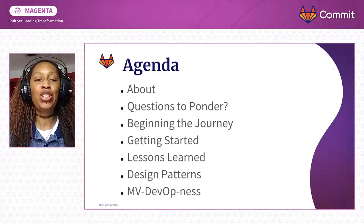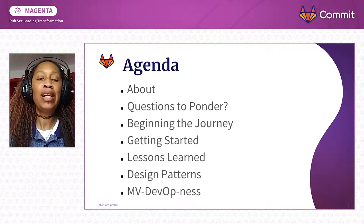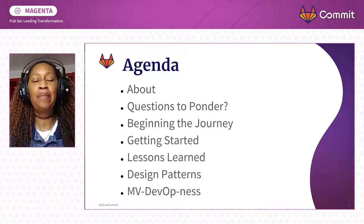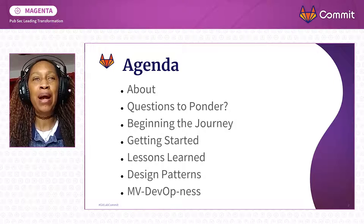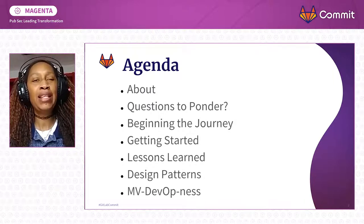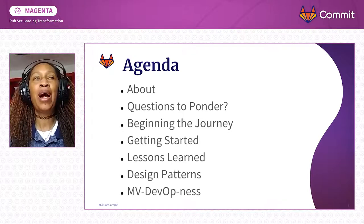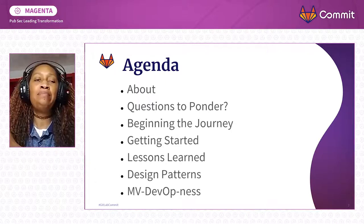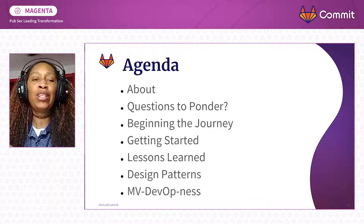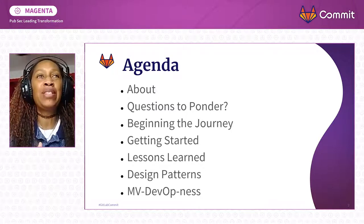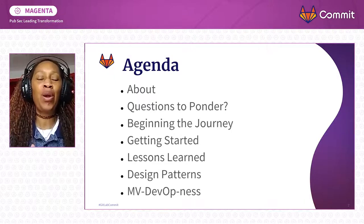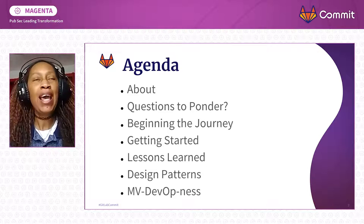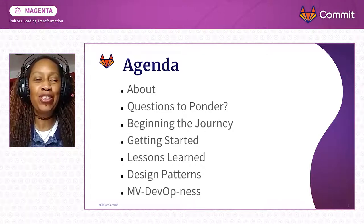Here is our agenda. We're going to talk about myself and where I'm from, some questions to ponder, beginning this journey and getting started, lessons learned, some DevOps patterns, and minimal viable DevOps-ness. When I was thinking about getting started and getting to an end state for DevOps, minimum viable product is what you would call it if you are doing an application — you go from requirements to that minimum product where a stakeholder can say yes or no. That's what I was thinking of: how do you know when you've gotten to a place where you can measure where you've been? And so that is what minimal viable DevOps-ness is.